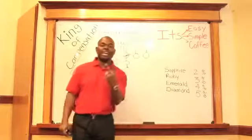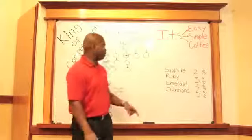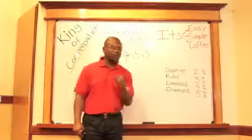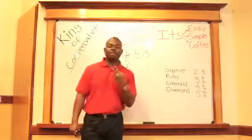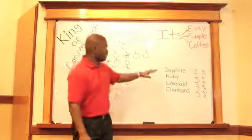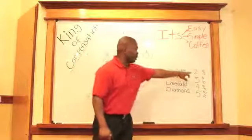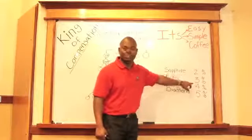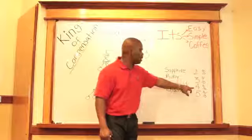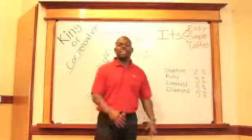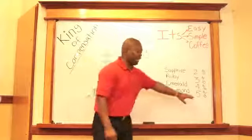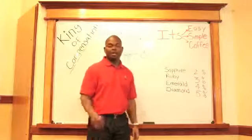At the Diamond level, let's go back. Sapphire, you get your first generation. Ruby, you get your second generation of generational bonus. When you become Emerald, you get your third. And when you become Diamond, you get the fourth generation in commissions. Now, the first generation will pay 2%. The second generation will pay 3%. The third will pay 4%. And the fourth generation, it pays 5% of the volume.